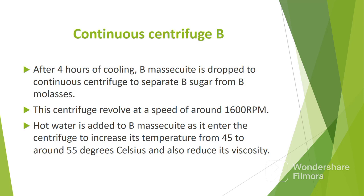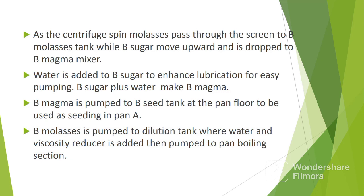Let's see how the formed B sugar is separated from the molasses. After 4 hours of cooling, B masecuite is dropped to continuous centrifuge B to separate B sugar from B molasses. This centrifuge revolves at a speed of around 1600 revolutions per minute. Hot water is added to the B masecuite as it enters the centrifuge to increase its temperature from 45 to 55 degrees Celsius and also to reduce its viscosity. As the centrifuge spins, molasses pass through the screen to the B molasses trough, while B sugar moves upward and is dropped to the B magma mixer. Water is added to B sugar to enhance lubrication for easy pumping. B sugar plus water make B magma, which is pumped to the B seed tank at the pan floor to be used as seeding in pan A. B molasses is pumped to a dilution tank where water and viscosity reducer is added, then pumped to the pan boiling section. This molasses is used to prepare C masecuite.